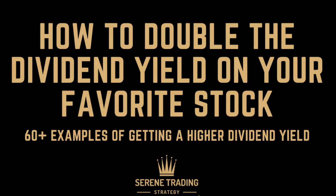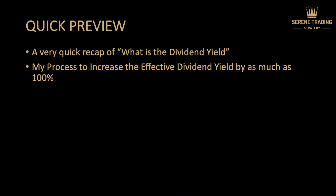So if the dividend yield is 3%, how can you make that yield 4% or 5%? We'll take a quick look at what the dividend yield is, just a quick definition so that we're all on the same page. Then we'll cover the core content — the process you can use to increase the dividend yield by as much as 100%. And I'm going to show you more than 65 examples where this works, so it's not just an outlier.